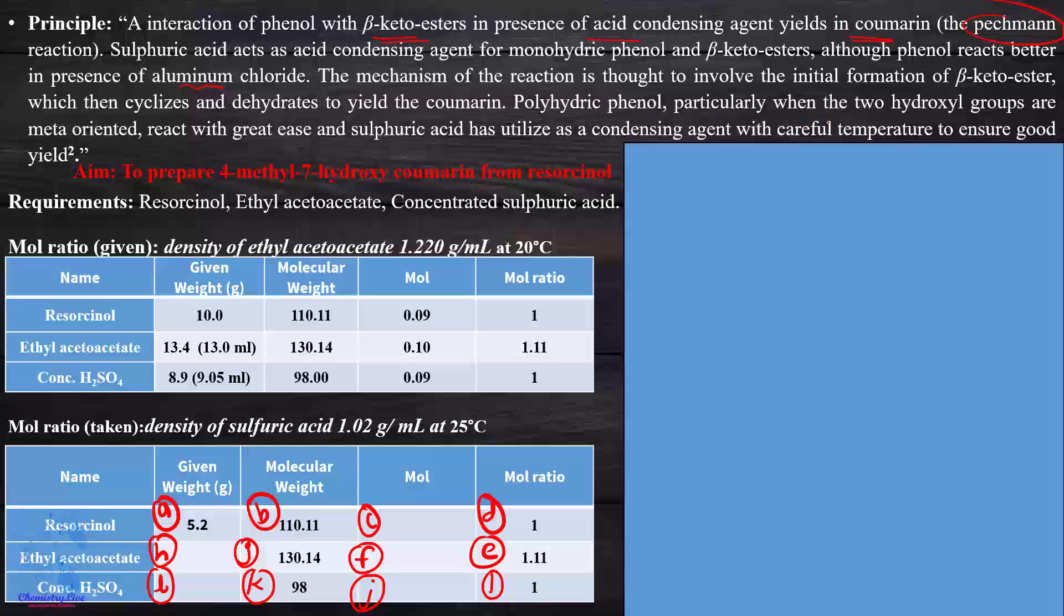The mechanism of reaction is thought to involve initial formation of beta-ketoester which then cyclizes and dehydrates to yield coumarin. Polyhydric phenols, particularly when two hydroxyl groups are meta-oriented, react with great ease and sulfuric acid is utilized as a condensing agent with careful temperature to ensure good yield.